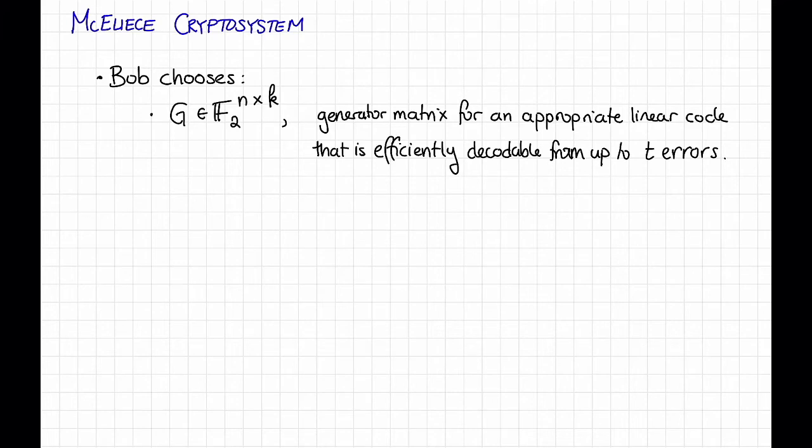So notice that not just any generator matrix will do. First, it needs to have an efficient decoding algorithm. So far, we don't know any of those, although we will see some of those in later videos. But more than that, it has to have some special structure which will help the security of this scheme. We're not going to go into detail about this. If you want some buzzwords, Bob should choose G to be the generator matrix for a binary Goppa code.